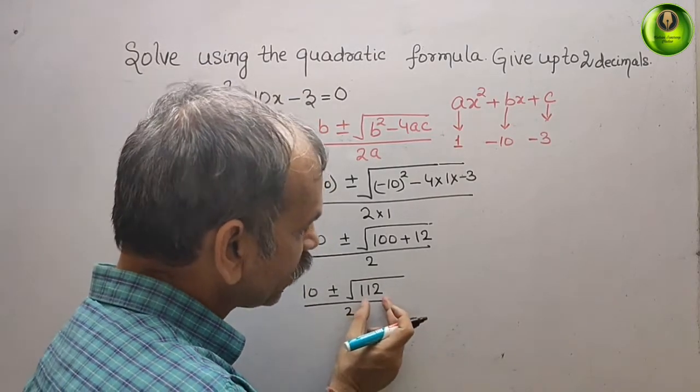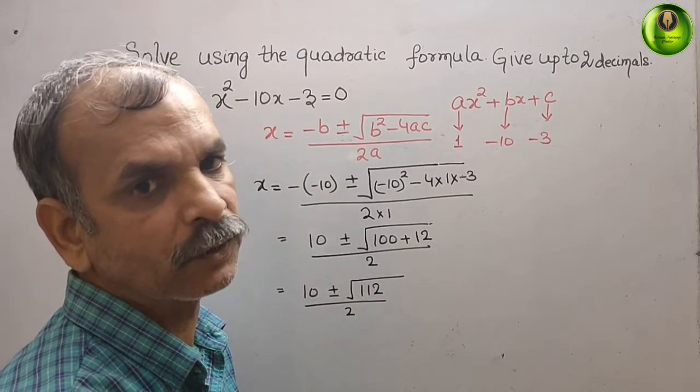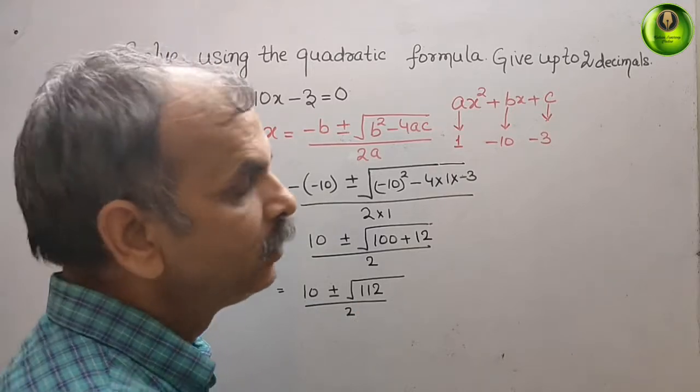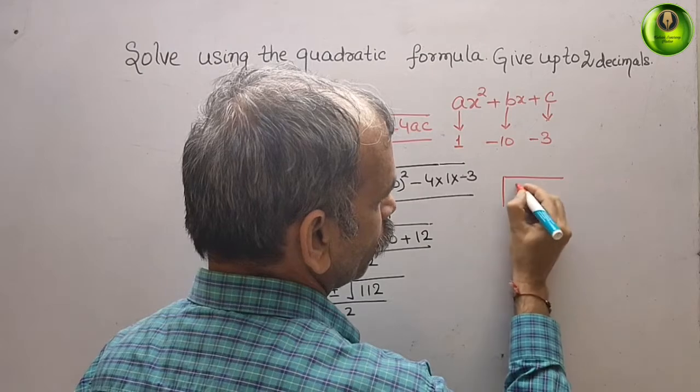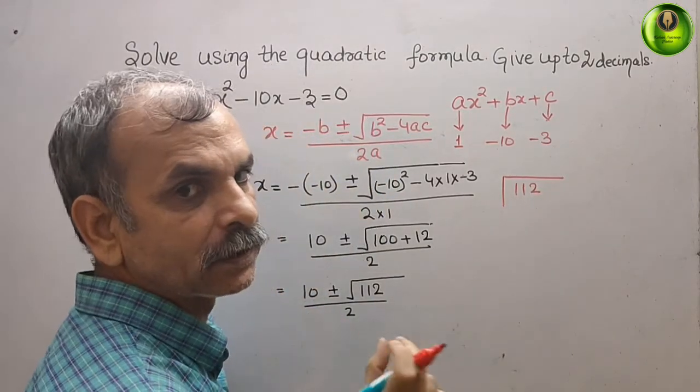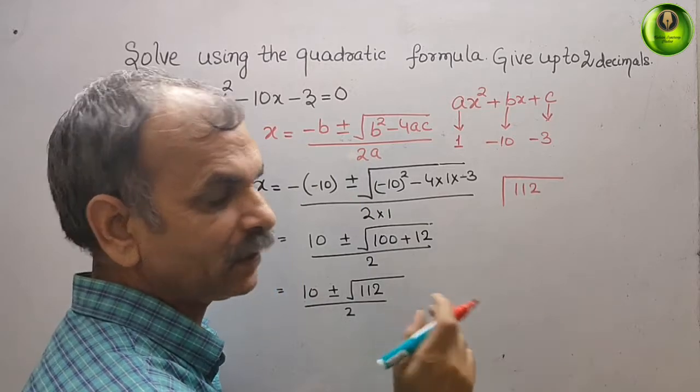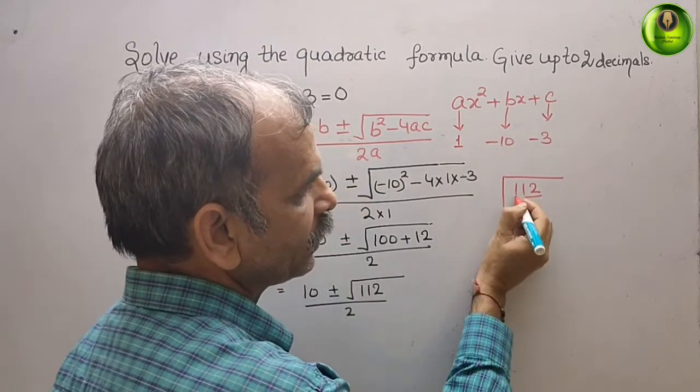We will find the square root of 112. Make pairs from the back side - you can make one pair, and this one is alone.